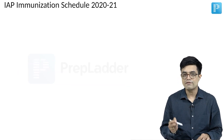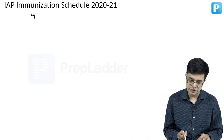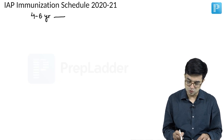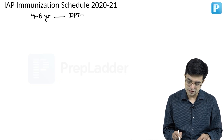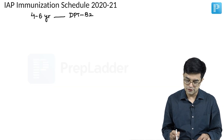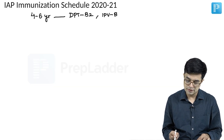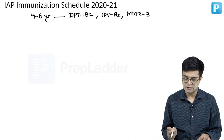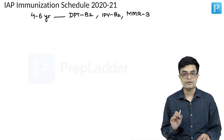After that, the next vaccination comes at 4 to 6 years. At 4 to 6 years, you will have boosters: DPT booster second, IPV booster second, and MMR3.